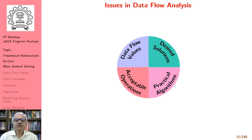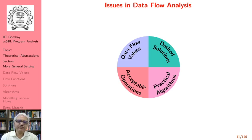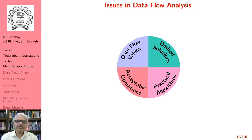Welcome back to the discussion on theoretical abstractions in data flow analysis. In the first part of the lecture, we looked at an example of constant propagation and observed that the setting of bit vector frameworks is not general enough to accommodate frameworks such as constant propagation. Hence there is a need to generalize our observations, and we will do so in the rest of this module.